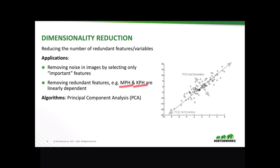For example, if we're training a model for an insurance company to determine a rate that a person has to pay, and one of the variables is car speed, then using miles per hour or kilometers per hour alone would be sufficient, because the other does not provide any new information but instead makes the model more complex.